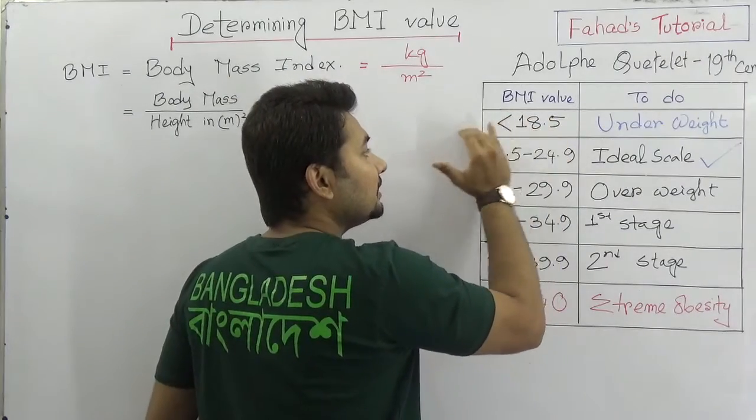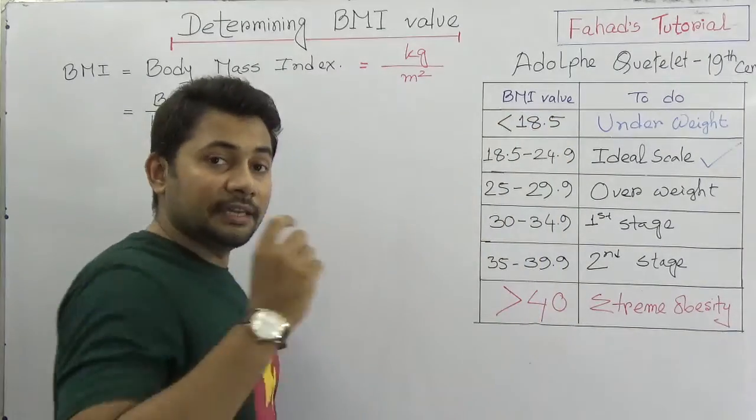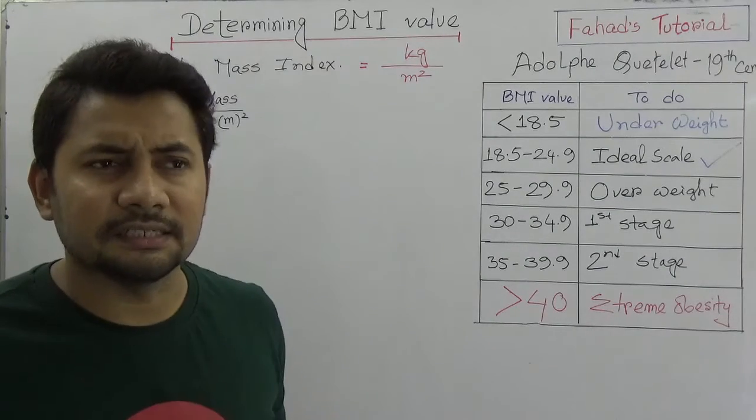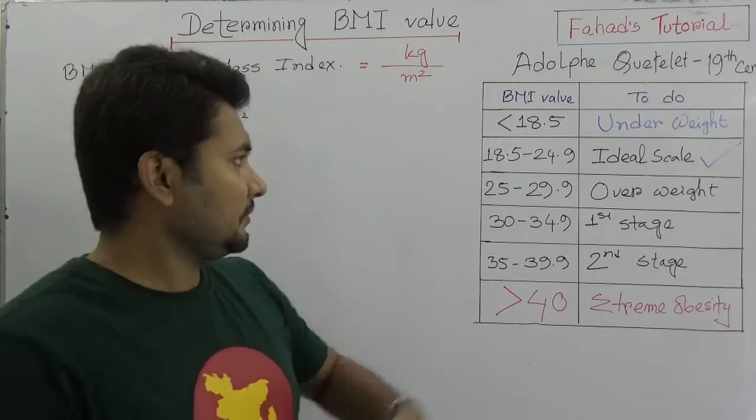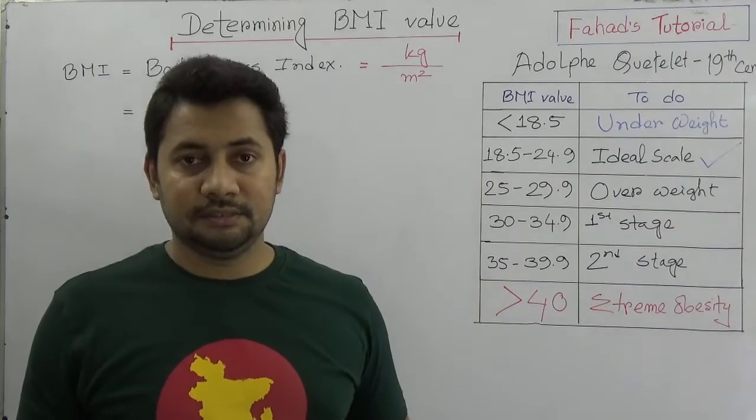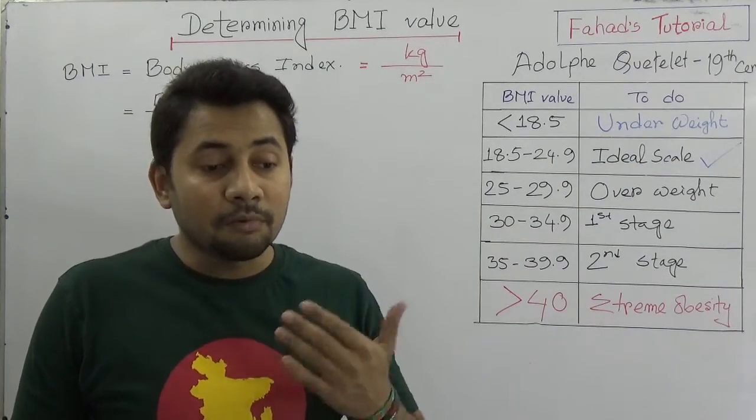But the thing is we need to understand that the BMI value that is less than 18.5 - if someone's BMI like 16 or 17 or 17.25, it means that the person is underweight and that person requires more food.